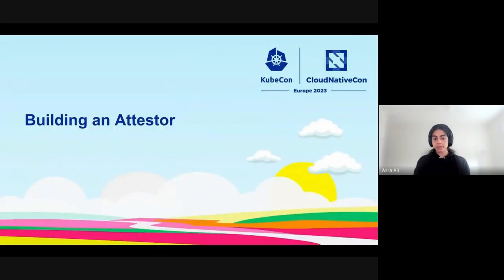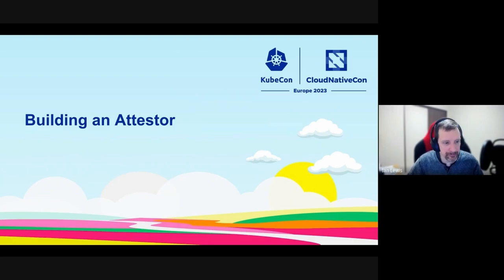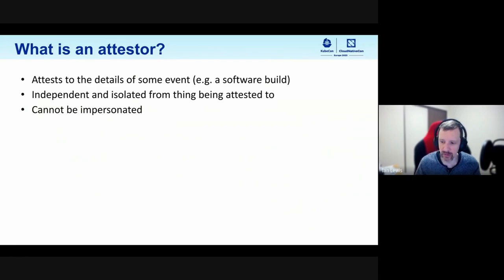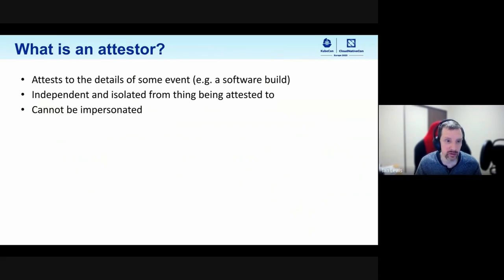Now I'll hand it off to Ian to talk about how to actually build an attester in full. So, in order to understand attestation and what is actually happening, we need to understand a little bit about attestors and what attestors actually do. The idea is that attestors attest to the details of an event that happened. In most cases, this is some sort of software build or software scan. As Asra mentioned, things like generating SBOMs can be attested to.